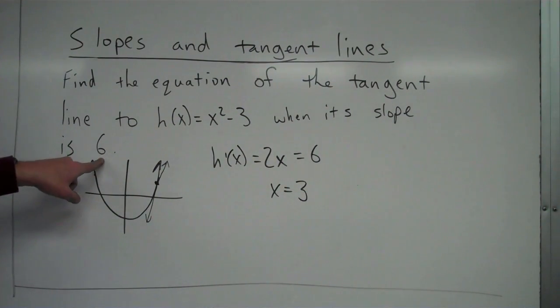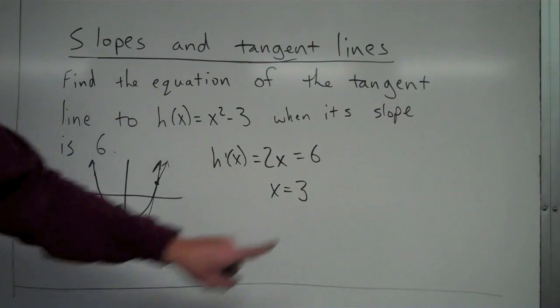So we already know the slope is going to be 6. We were told that. That's what we were given to start with. We found that the x value of the point we're going to use is 3.